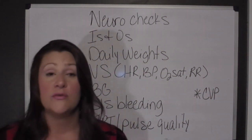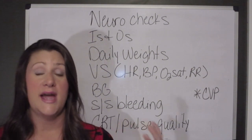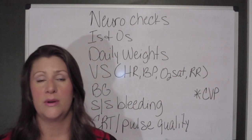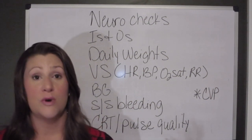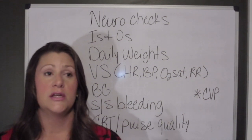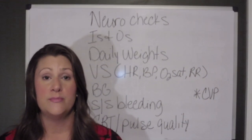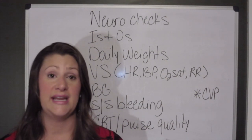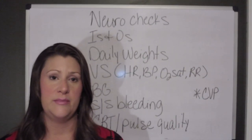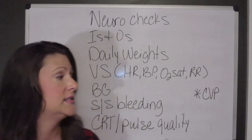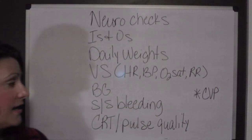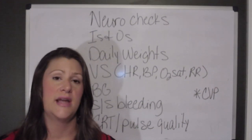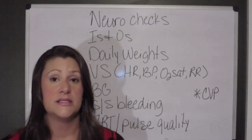Signs and symptoms of bleeding are important to monitor. If someone is in hypovolemia due to a GI bleed, you're going to monitor their stool and dressings for patients with wounds. You're going to measure abdominal girth if the patient is at risk for internal bleeding. Capillary refill time and pulse quality are also tangible indicators of a patient's fluid status.